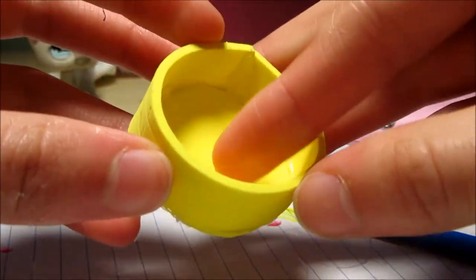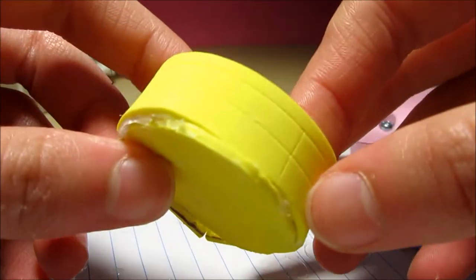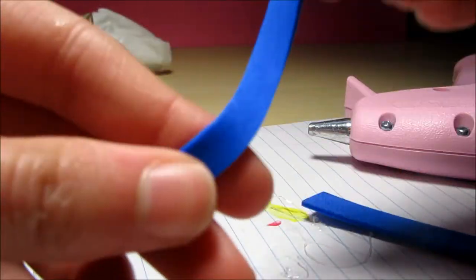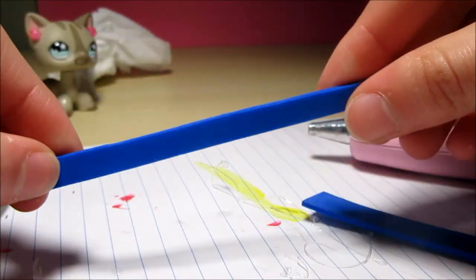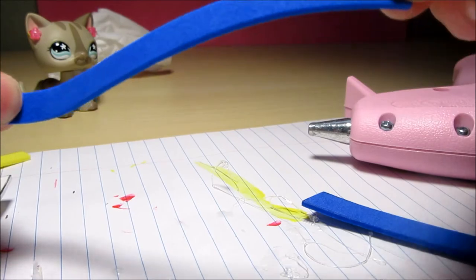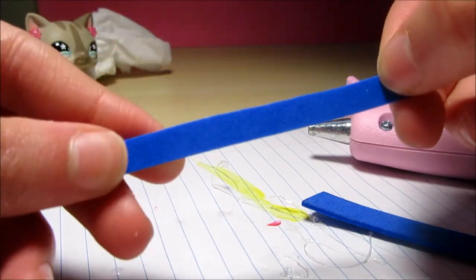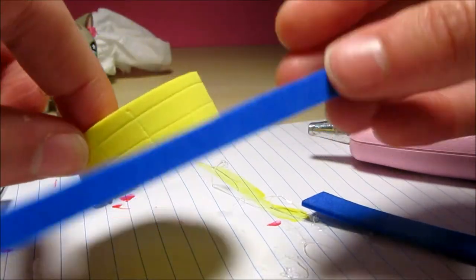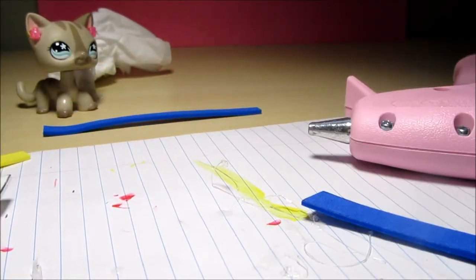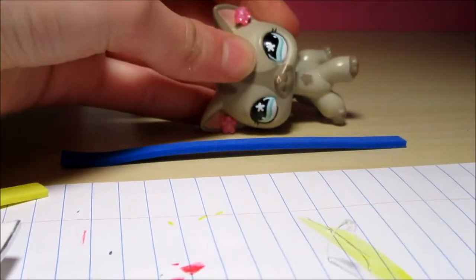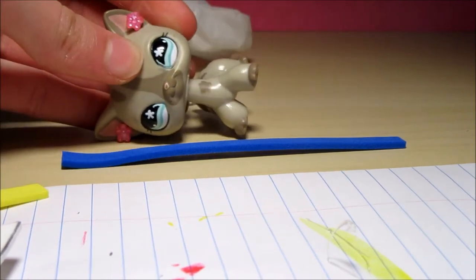Once your basket is all dried, what you then want to do is you want to get the little handle for the basket. So you just want to cut out a thin piece of foam and it totally can be the same color if you want or it can be a different color. I'm using a different color and it's about two short hair LPS cats tall.